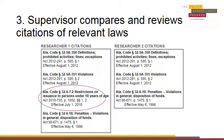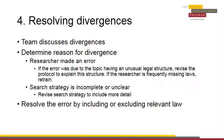Once researchers have redundantly researched the same jurisdictions, the supervisor should compare what laws were collected for each jurisdiction to determine if any laws were missed by one researcher. This check can be used not only to identify which laws were collected by one researcher and not the other, but also to determine if the laws collected in general are relevant to the project. In the above example, Researcher 1 collected a law that Researcher 2 did not find: Alabama Code 32-6-7.2.